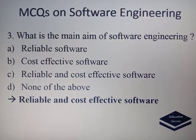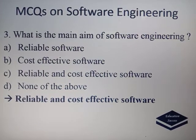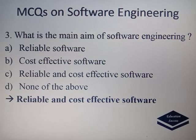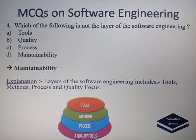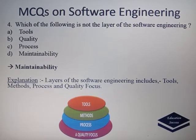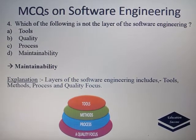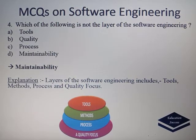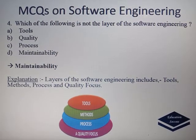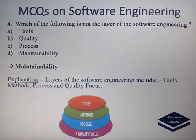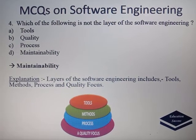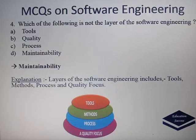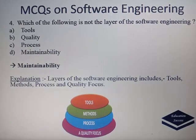What is the main aim of Software Engineering? Software Engineering aims to produce reliable and cost-effective software. Which of the following is not a layer of Software Engineering? The options are Tools, Quality, Process, and Maintainability. The answer is Maintainability, because the layers of Software Engineering include tools, methods, process, and quality focus.